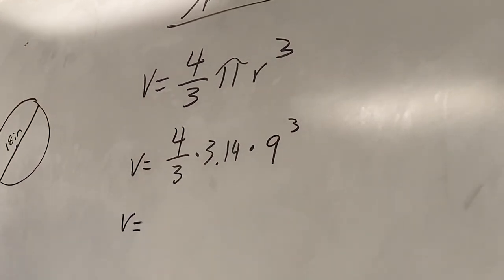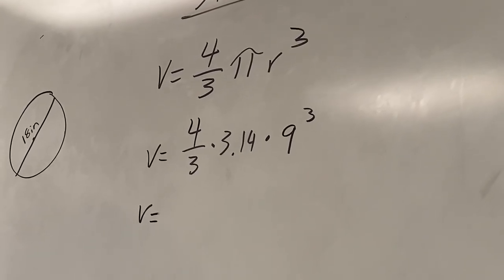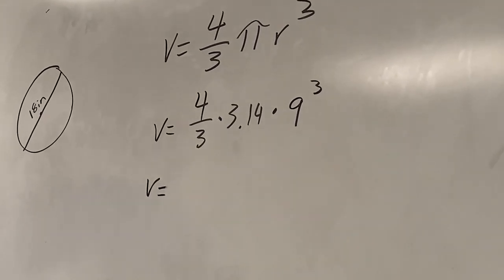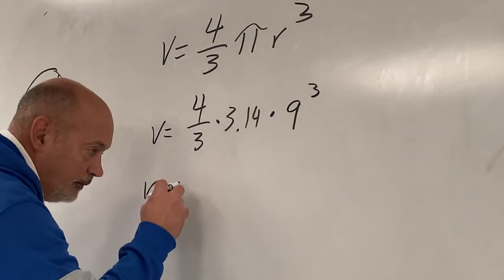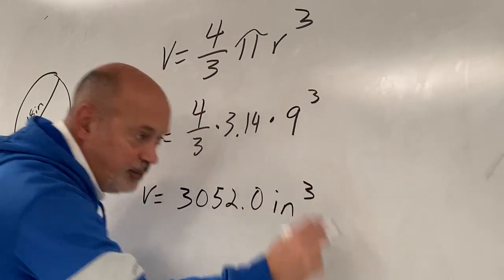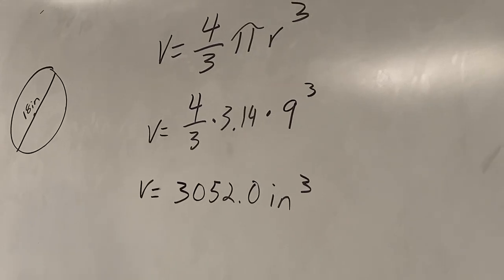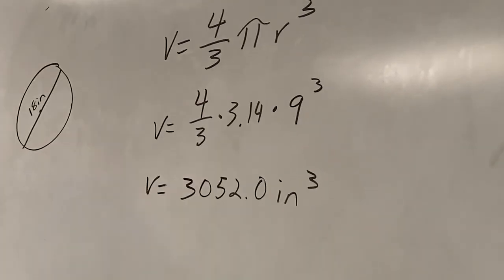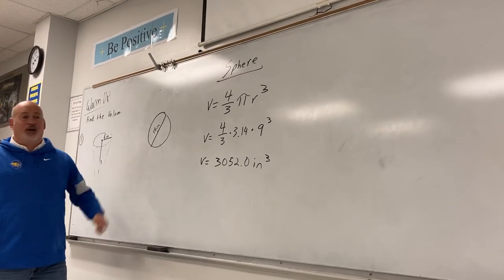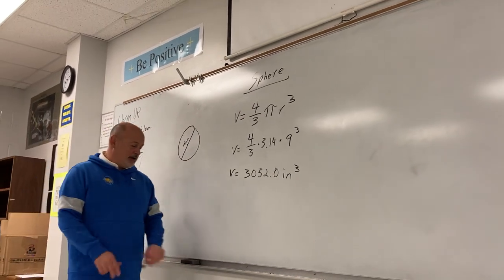Don't forget nine to the third. Emma, what did you get? 3,052.0. Let's put inches cubed. Do y'all agree with 3,052.0? Yes. I don't think we really need to do another one — two is enough. Just don't forget: if they give you the diameter, cut it in half, and don't forget to cube the radius. All right, let's rock and roll.